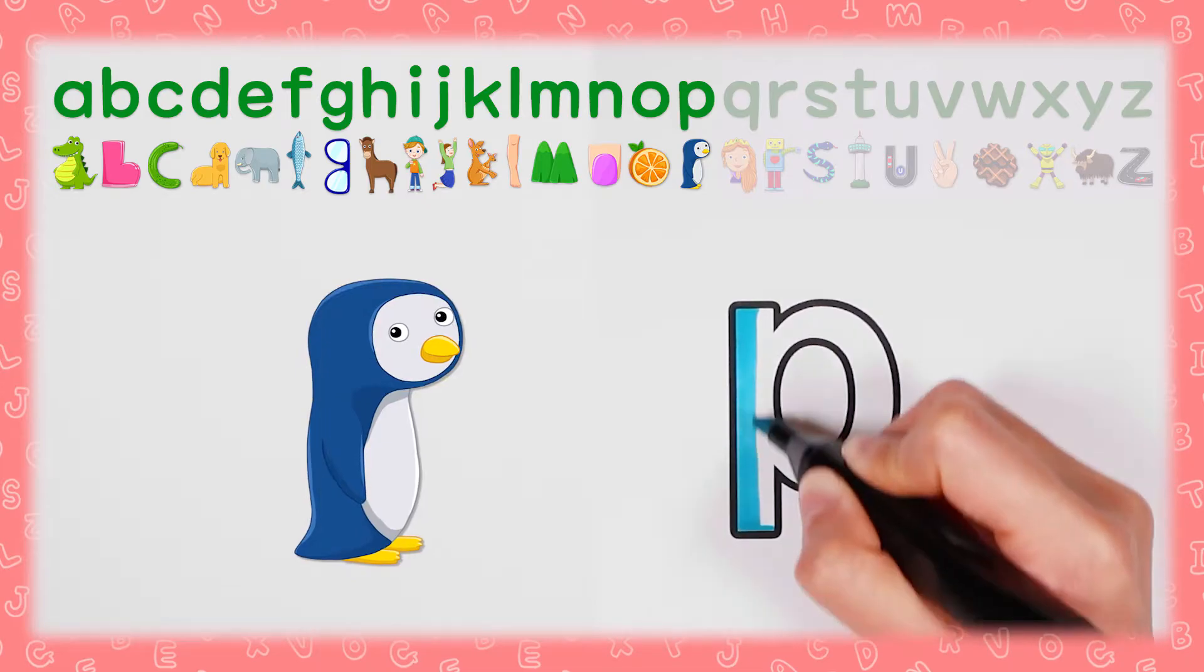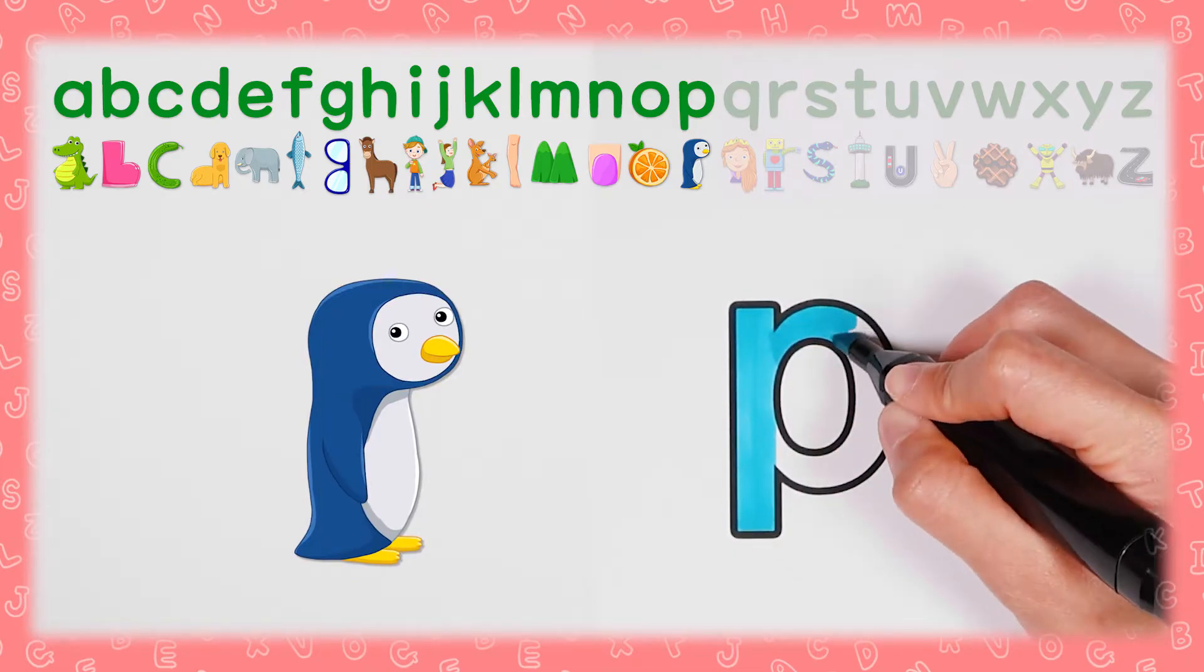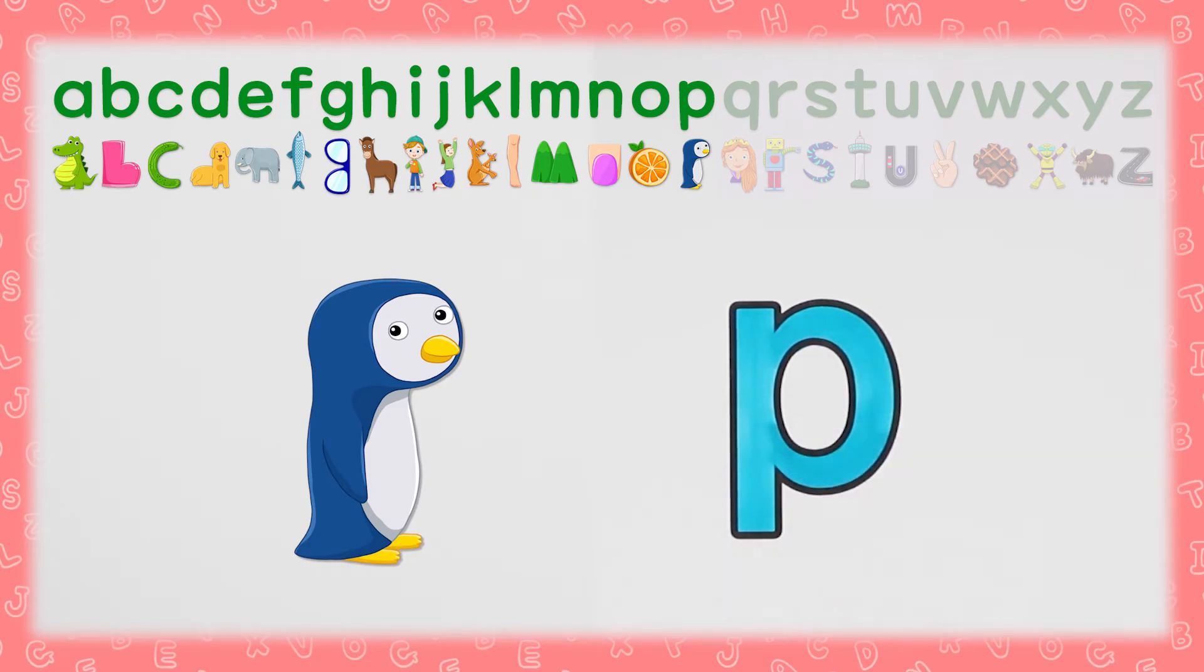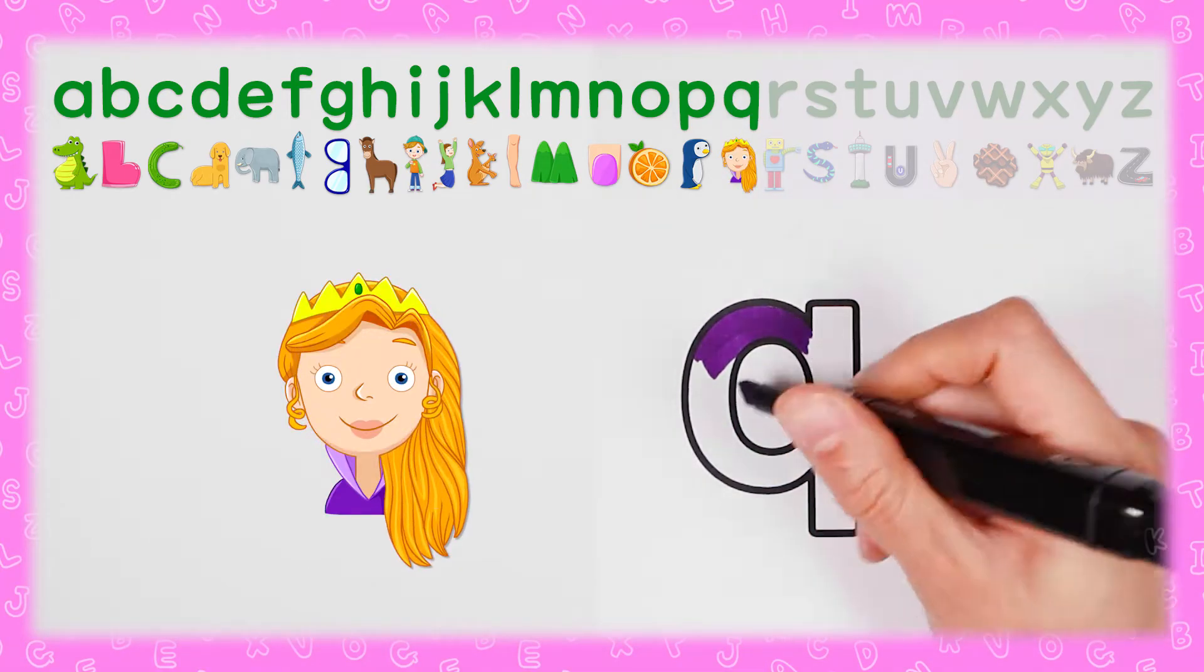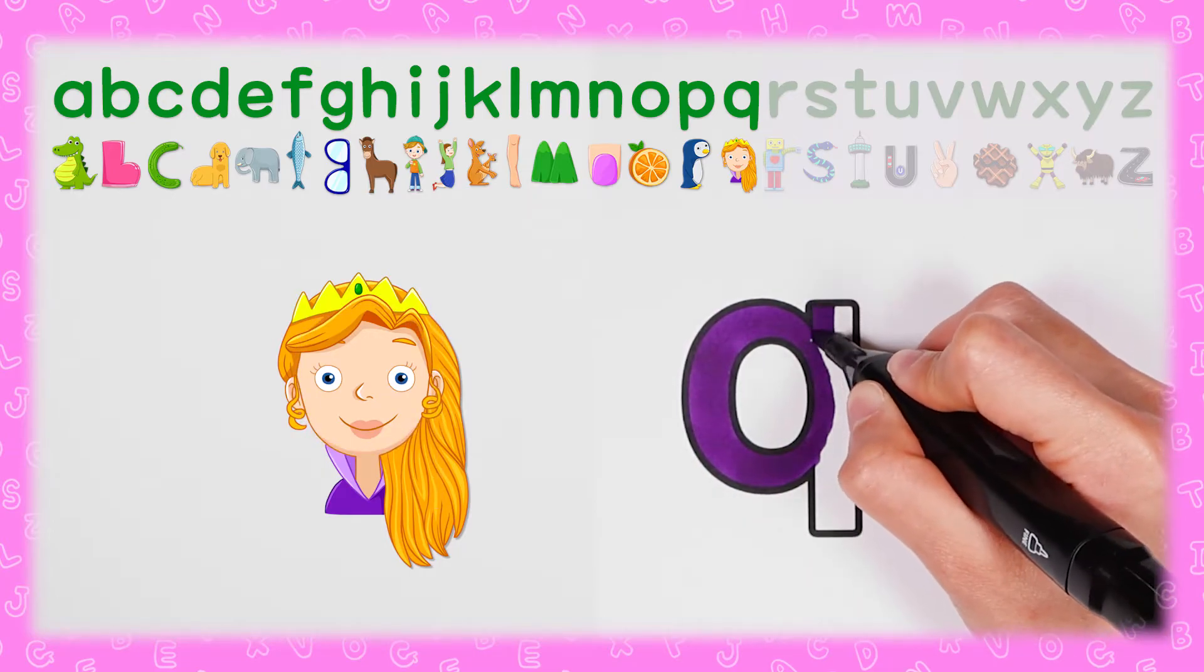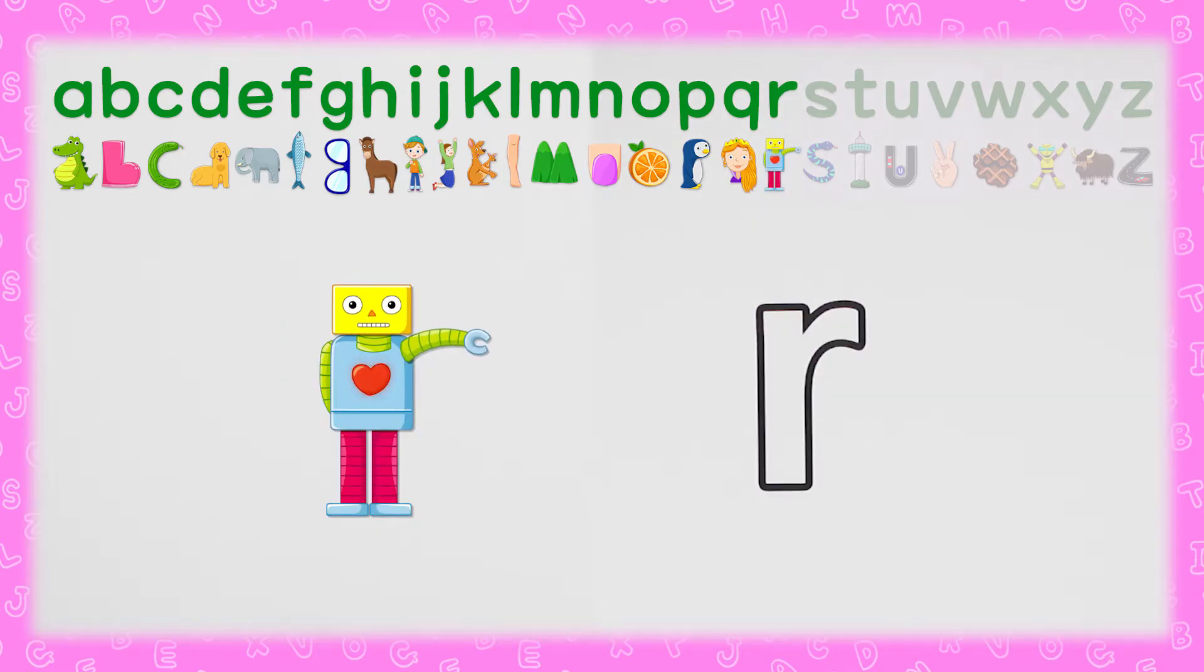P, 옆모습 펭귄 P P (penguin side profile). Q, 긴머리 퀸 Q Q (queen with long hair)